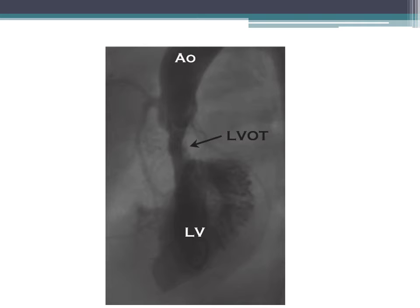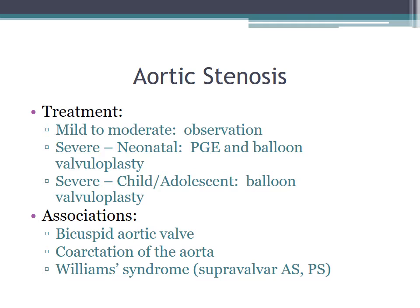Treatment for mild to moderate aortic stenosis is observation. For severe AS in the neonatal period, prostaglandins and balloon valvuloplasty are offered. For severe AS in the child or adolescent, balloon valvuloplasty can be performed. Associations to know are bicuspid aortic valve, coarctation, and Williams syndrome. Williams syndrome can have supravalvar aortic stenosis as well as supravalvar pulmonary stenosis.